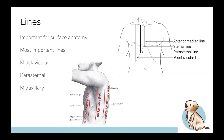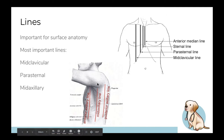Before diving into the thorax, let's establish a couple of important lines for surface anatomy, especially important when you get to cardio. You have your midclavicular line - in the middle of your clavicle, draw a straight line down. Your parasternal line is right next to the sternum. And your mid-axillary line - your axilla is your armpit, so mid-axillary is basically the middle of your armpit going down. There are other lines but these are the most important ones.